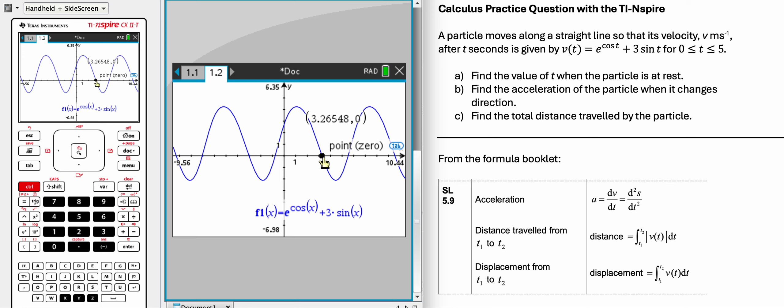But the acceleration is the derivative of the velocity, and you can see that right here in this formula, the acceleration is the derivative of the velocity. So what we need to do is take the derivative, and then find out what that is at this time.